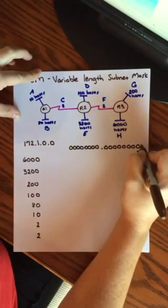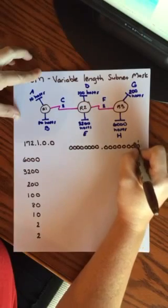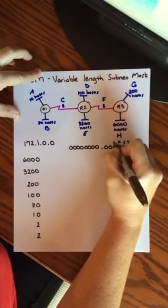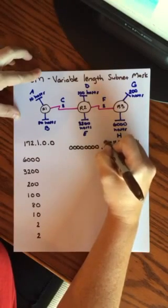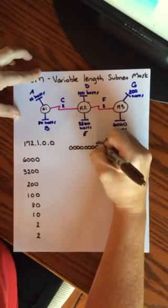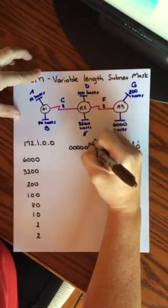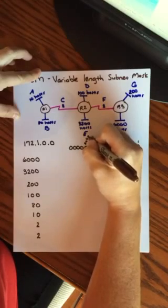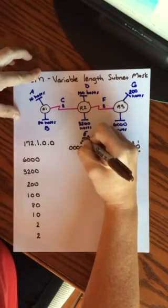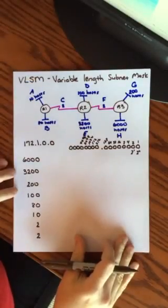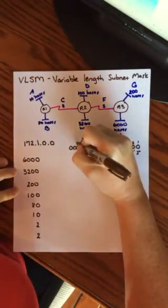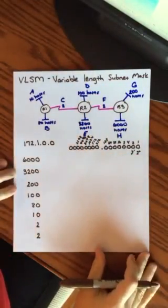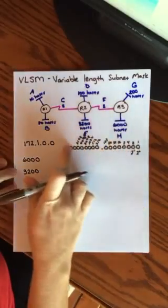So whenever you're looking at range, we start with 2 to the 0, which is 1. 2 to the 1 is 2. So 1, 2, 4, 8, 16, 32, 64, 128. You got 256, 512, 1024, 2048, 4096. That's as high as I need to go. No, wait, I have a 6,000 one in there. So it's 8,192. Alright, so that's the range of our bits. It goes up exponentially.